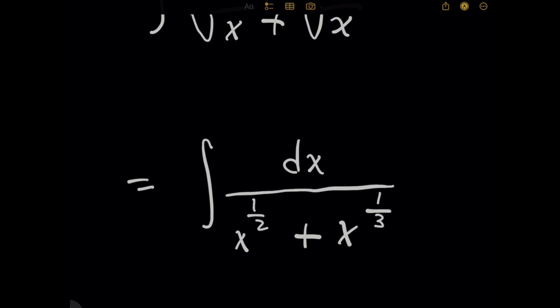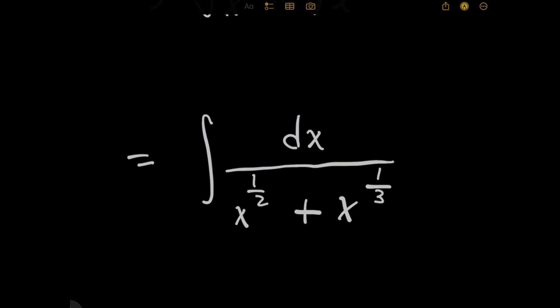Now, many of you may have tried a u substitution where you let u equal x to the 6th, and you got stuck because for that, you require that you have an x term in front of dx on top here, which we don't have.